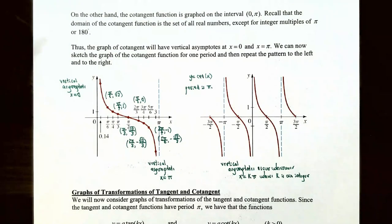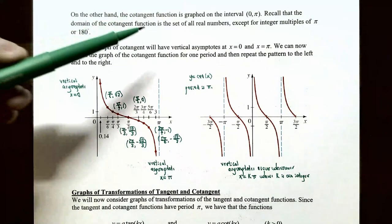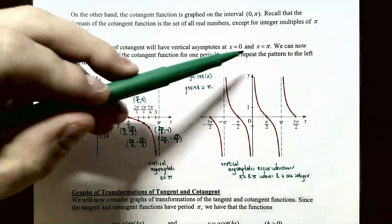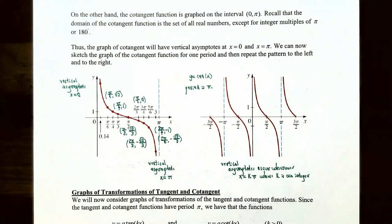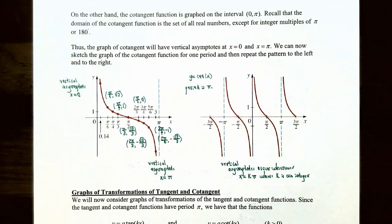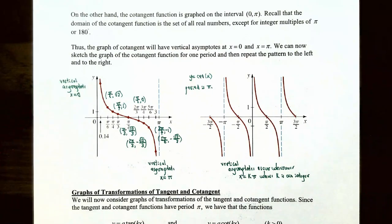The cotangent function is graphed on the interval 0 to π. The domain of the cotangent function is all real numbers except integer multiples of π or 180°. Therefore, the cotangent function has vertical asymptotes at x = 0 and x = π — rather than at x = −π/2 and x = π/2 like y = tan(x). You can sketch one complete period of the cotangent function between 0 and π radians. At x = 0 there is a vertical asymptote on the y-axis, and at x = π there is another vertical asymptote, because cot(0) and cot(π) are both undefined.